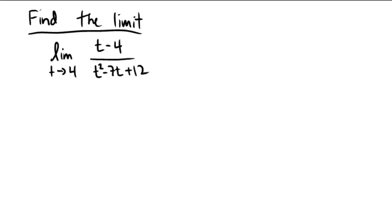So if we just try to straight up plug in the number that's closest as we can to 4, namely 4, notice that in the numerator you would get 4 minus 4, and in the denominator you would get 4 squared minus 7 times 4 plus 12.